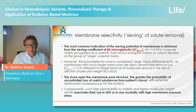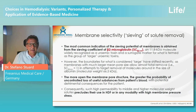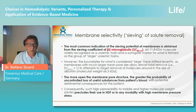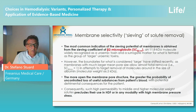Normally a dialyzer should have a sieving coefficient for beta-2 microglobulin equal to one. However, it is important to recognize the risk of removing substances that should not be removed — I am referring mainly to albumin. The more open the membrane pore structure, the greater the probability of uncontrolled loss of useful substances from the patient's blood, such as albumin. Consequently, such permeability to middle and higher molecular weight solutes precludes their use in hemodiafiltration or any modality with high membrane pressure stress.